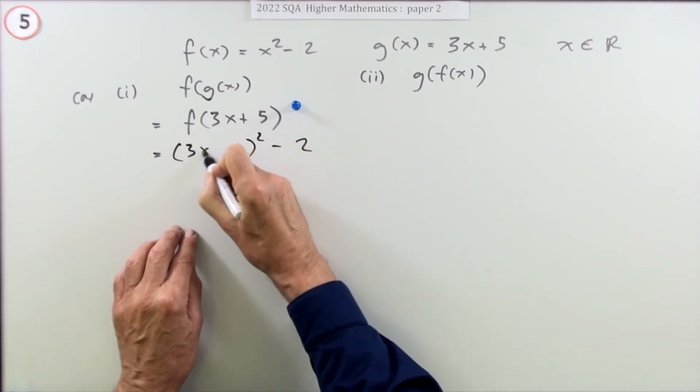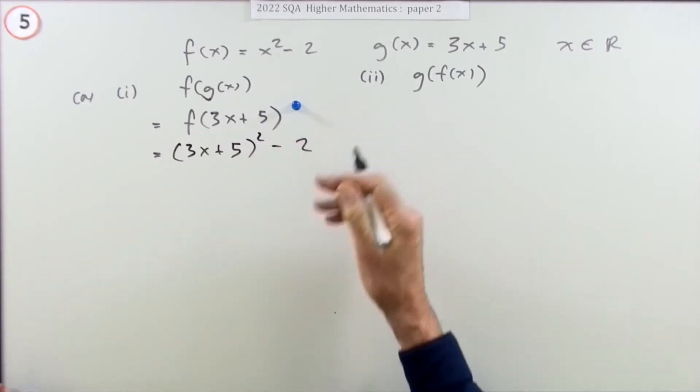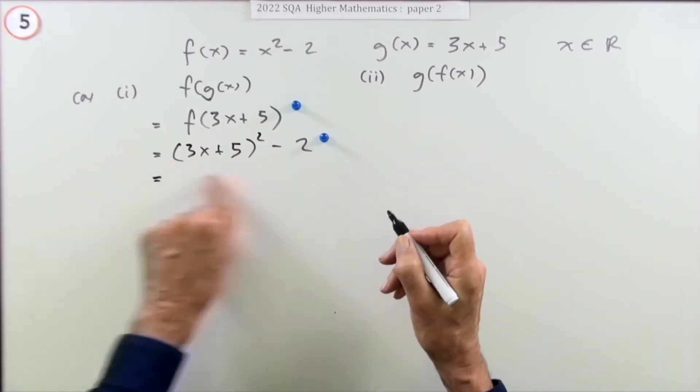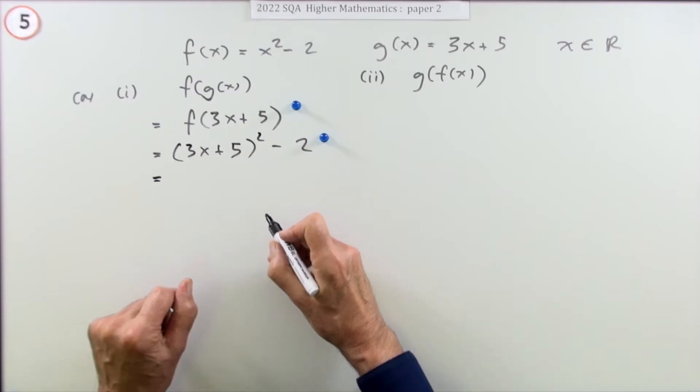and that happens to be 3x plus 5. That's the second mark according to the marking scheme. That doesn't feel finished though, so you may as well multiply it out since it's just squaring a bracket.